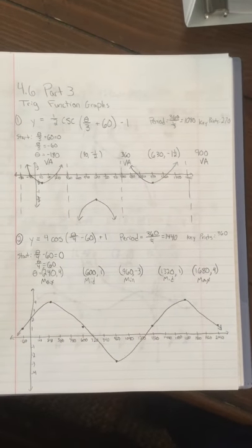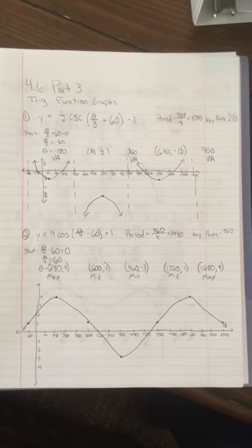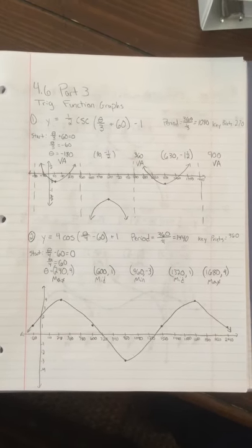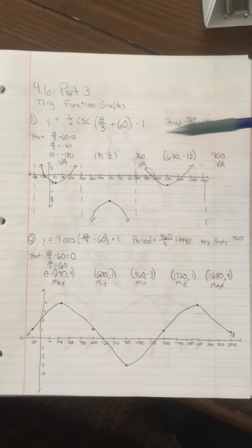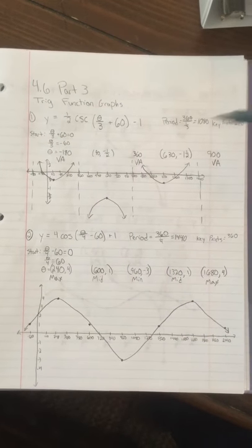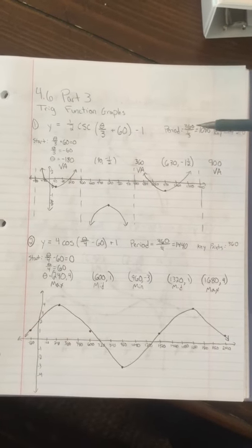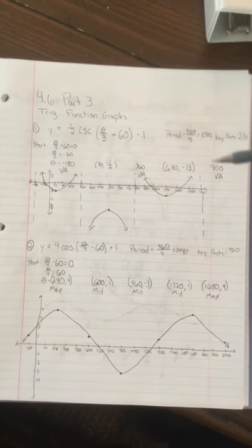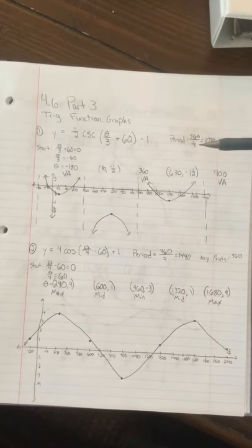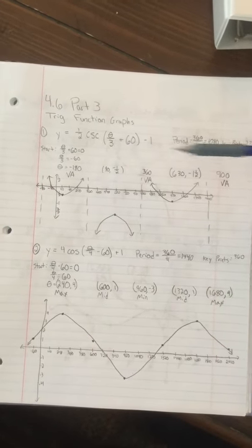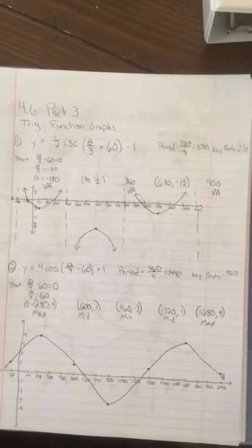In this video I'm going to go over 4.6 homework part 3, six problems with one being of each trig function. Starting with number one, the first thing I would do is find the period and the values of each key point. For all trig functions except tangent and cotangent, the period is 2π over B or 360 over B. Because this is cosecant, I did 360 over B, which gave me a period of 1080 degrees with key points at every 270 degrees.